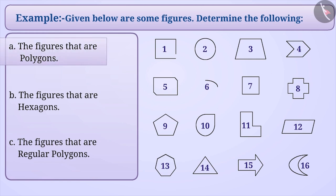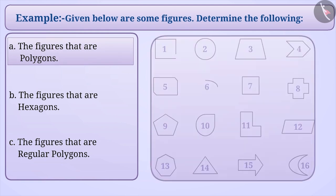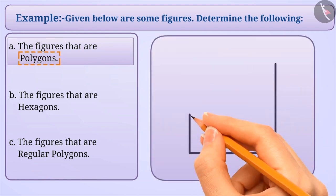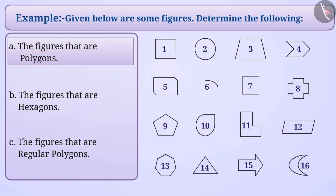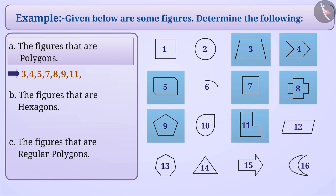Let's determine the figures that are polygons. A polygon is a closed figure made up of line segments. Amongst the given figures, the closed figures made up of line segments are figure 3, 4, 5, 7, 8, 9, 11, 12, 13, 14, 15. So, all these are polygons.